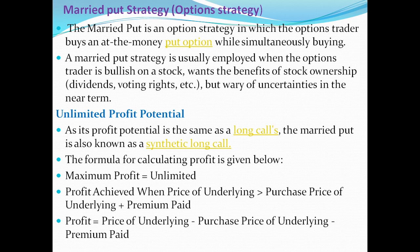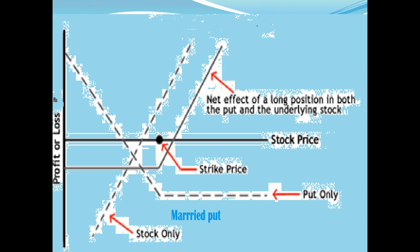The married put has unlimited profit potential, as its profit potential is the same as a long call. Married put is also known as a synthetic long call. The formula for calculating profit is: maximum profit equals unlimited. Profit is achieved when the price of the underlying is greater than the purchase price of the underlying plus premium paid. Profit equals price of underlying minus purchase price of underlying minus premium paid.